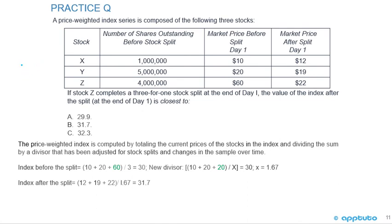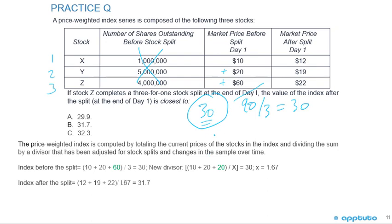Once you've seen this type of question, the math isn't difficult. First, note that the number of shares outstanding is red herring information — we don't need it. What we need is the index level before the stock split. Since it's price weighted with three stocks: 60 plus 20 plus 10 equals 90, divided by 3 gives a value of 30.